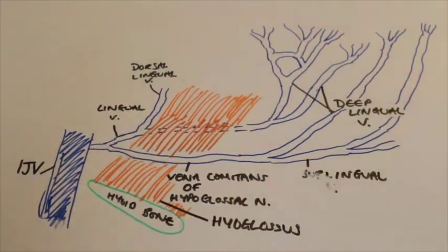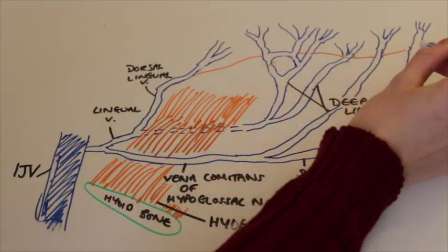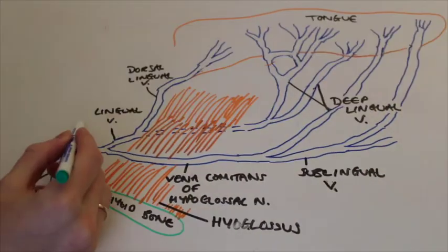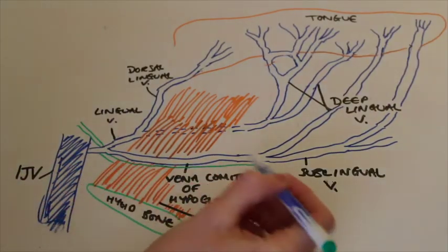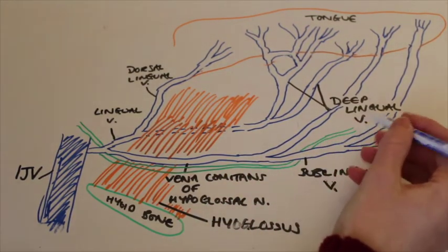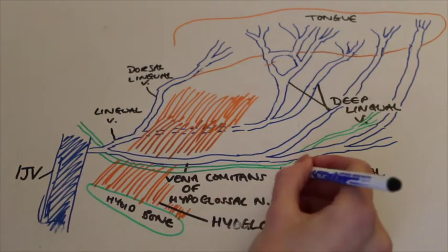Here I've also quickly drawn in the hyoglossus muscle to show the veins that go over and under it, so the dashed or the straight lines. I've also quickly drawn in the tongue, so you can see that as well, and the hypoglossal nerve, which the vena cometans runs alongside.